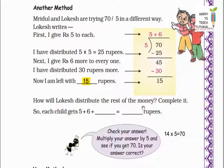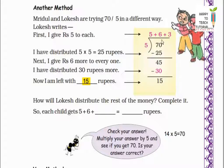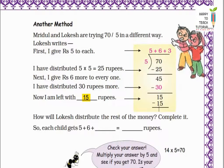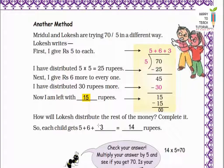How will Locis distribute the rest of the money? Ab 15 rupees bache hain aur 5 children hain. So 5 into 3 is 15. Iska matlab hai ki yahan hume 3 rupees aur baantne honge 5 bachchon mein. So 5 into 3 equals 15. 15 minus 15 equals 0. That means now nothing is left and all the money is divided equally among 5 children. So each child gets 5 plus 6 plus 3 equals 14 rupees.